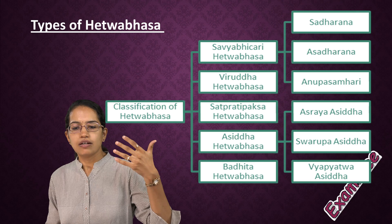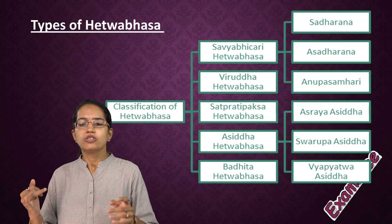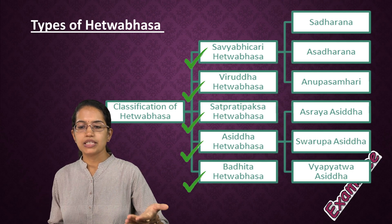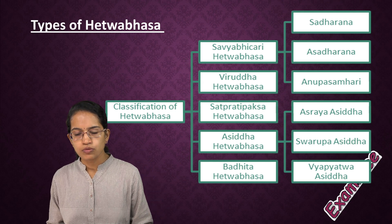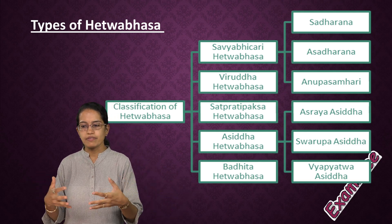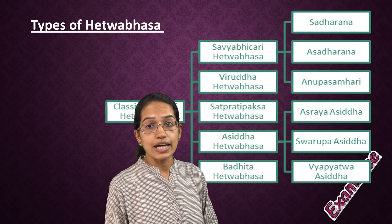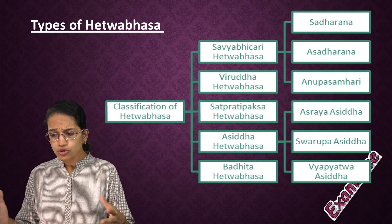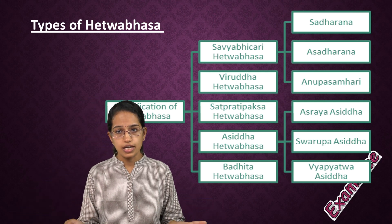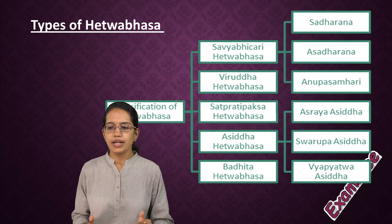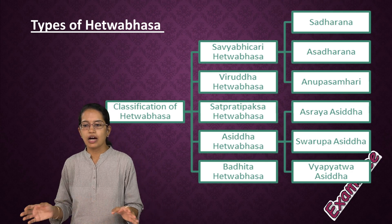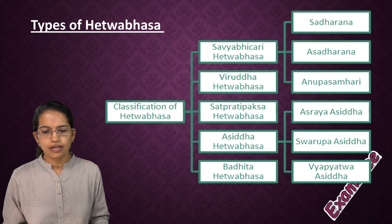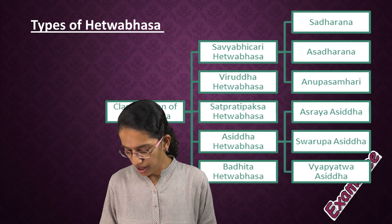When we focus on Hetvabhasa, we have five fallacies under Indian logic: Savyabhichara, Viruddha, Satpratipaksha, Asiddha, and Badhita. Savyabhichara is explained under three heads: Sadharan, Asadharan, and Anupasamhari. Viruddha is what is opposite — whenever you talk about opposite facts, for example air is heavy but air is empty, you are talking about contradictory things — that is a Viruddha Hetvabhasa. Asiddha is a futile reason without anything. Under Savyabhichara, you have a Hetu — the reason which is inconsistent or inconstant. The subclassification of Hetvabhasa is very, very important.